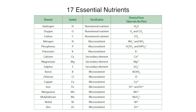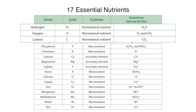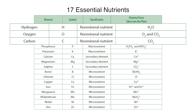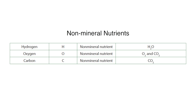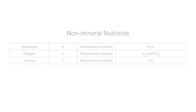In total, there are at least 17 nutrients that are essential for plant growth. Plants acquire three of these nutrients — carbon, hydrogen and oxygen — from the atmosphere and water. These three nutrients are therefore regarded as non-mineral nutrients.